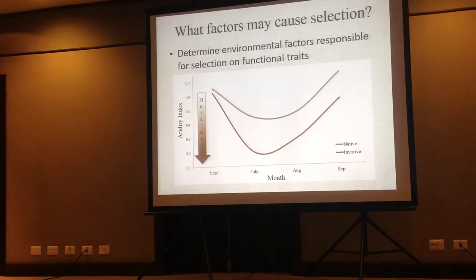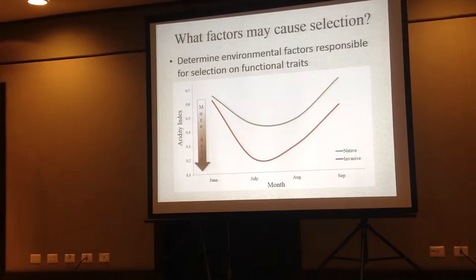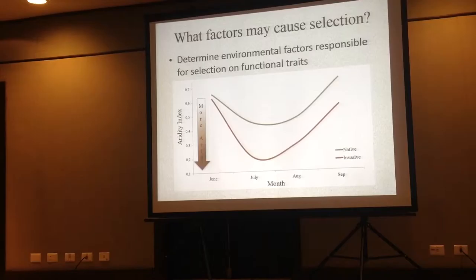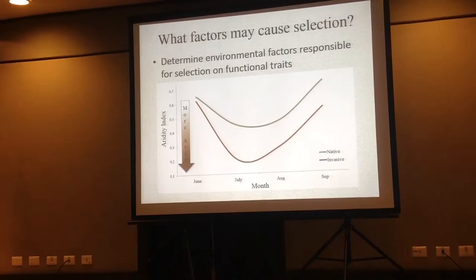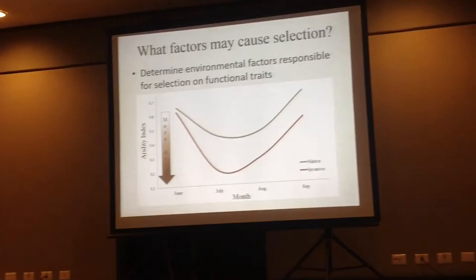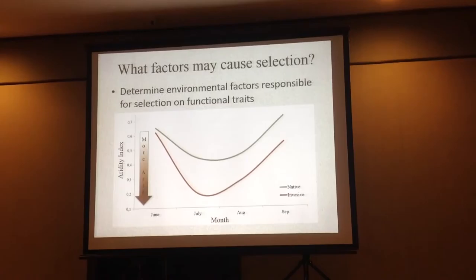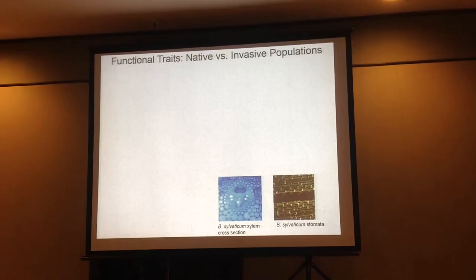The first thing I had to figure out was what traits to measure. I wanted to look at what environmental stressors could be driving selection in the invasive range. I performed climate matching — we had some idea of the hypothesized source regions for the invasion of B. sylvaticum. I took climatic data from those regions and found that something majorly different was aridity, or dryness. Here's an aridity index — as you go down the index, the area is more arid. The red line is the invasive regions and the green line is the native regions. It's much more arid in the invasive regions, suggesting that water stress might be a factor driving selection.